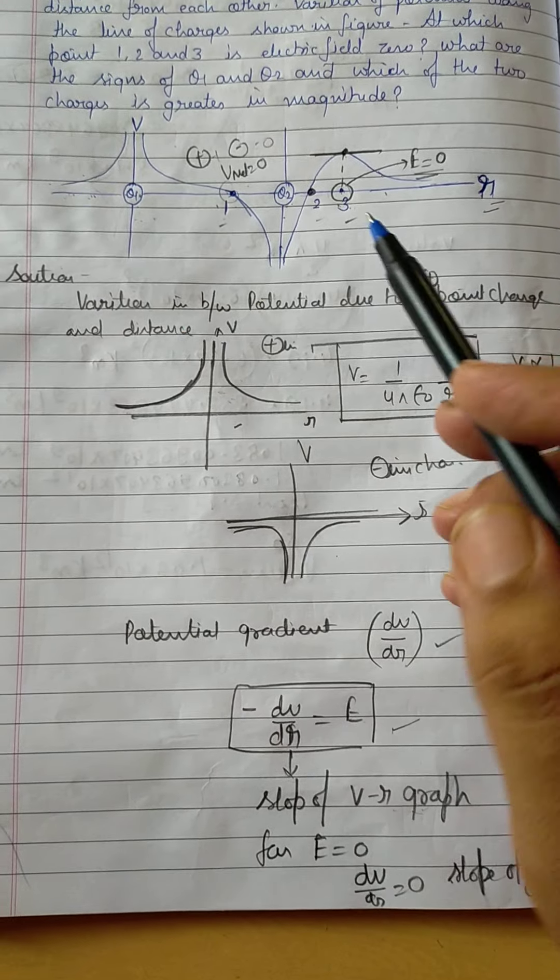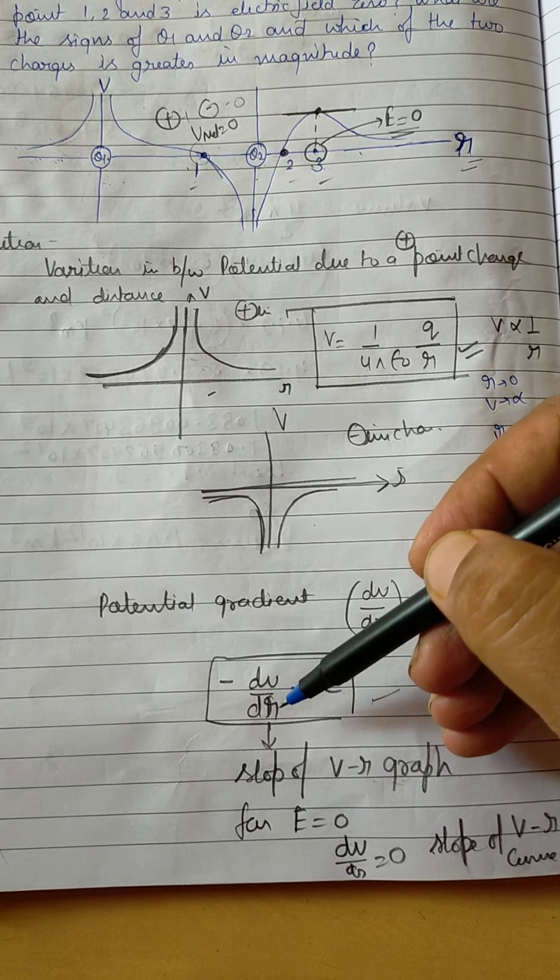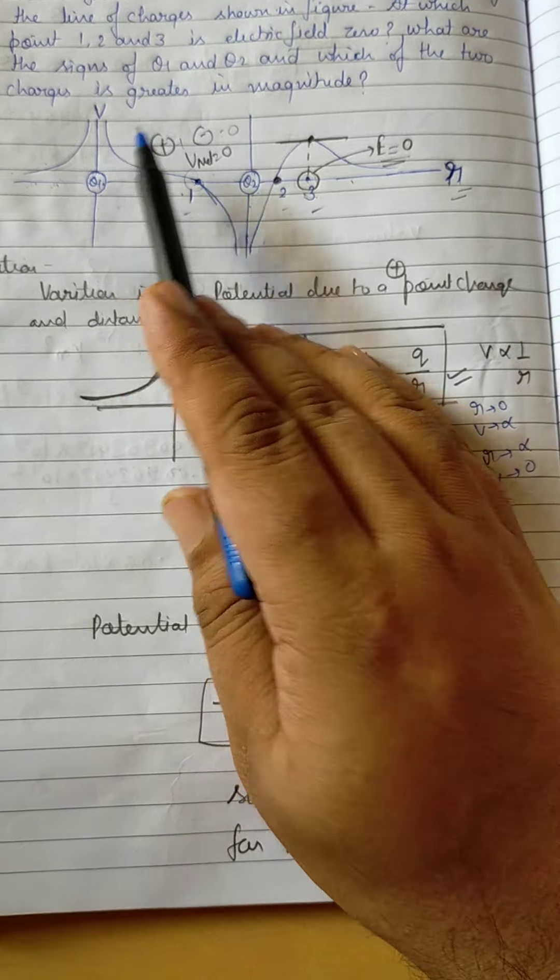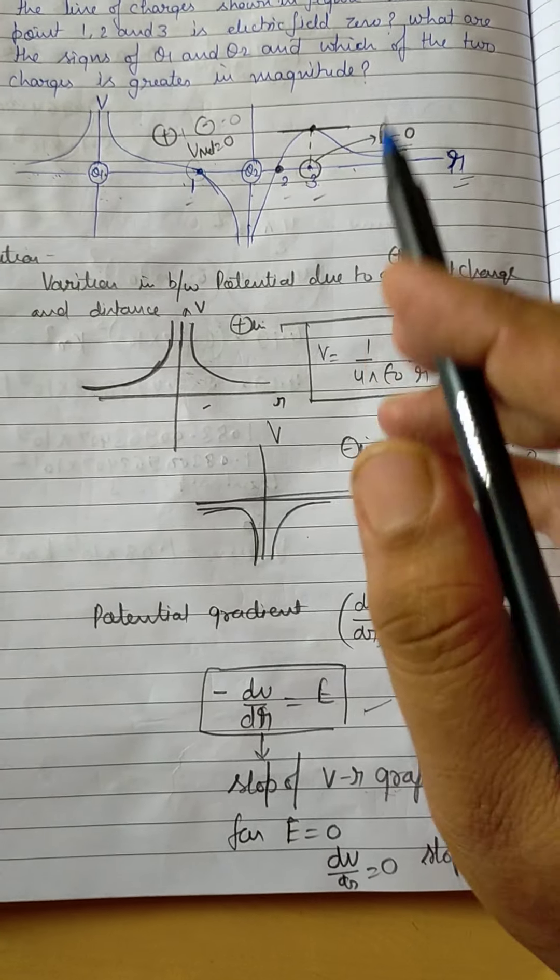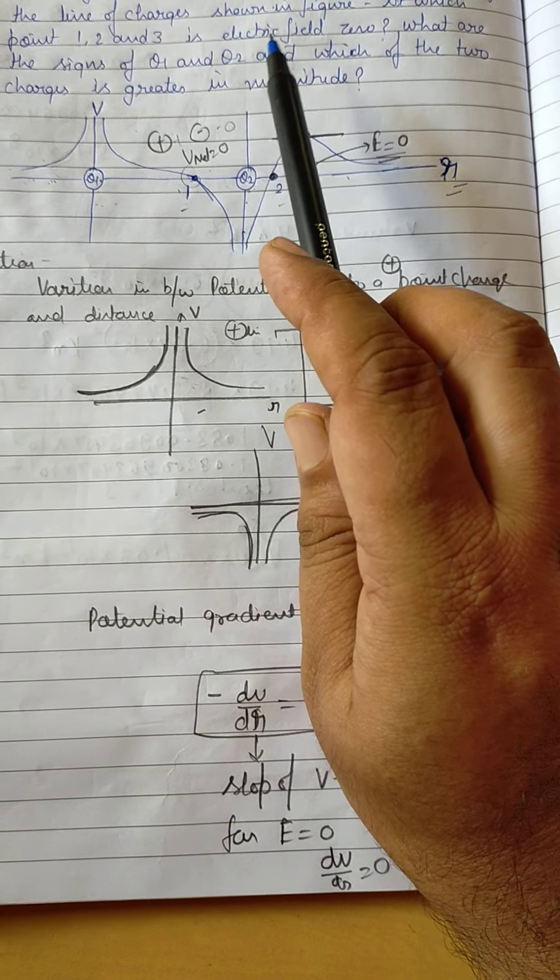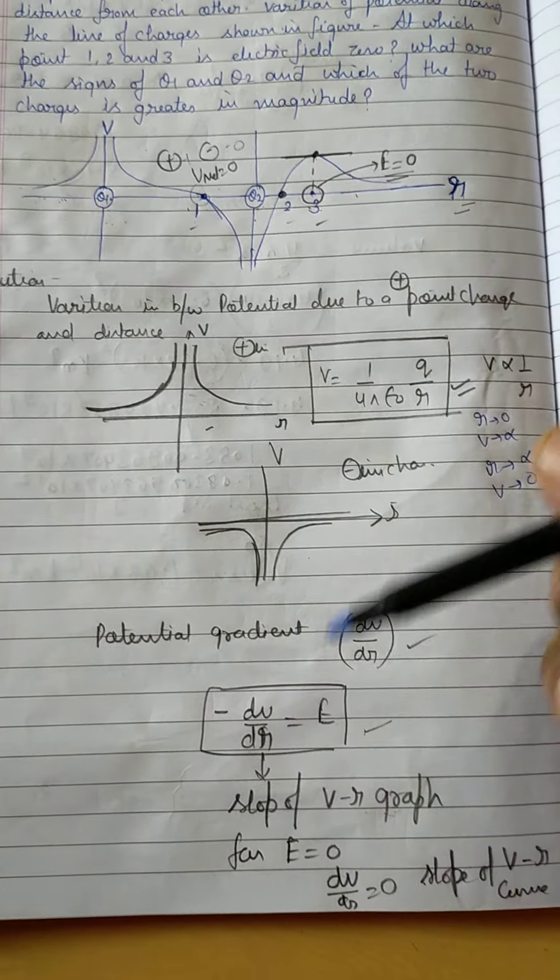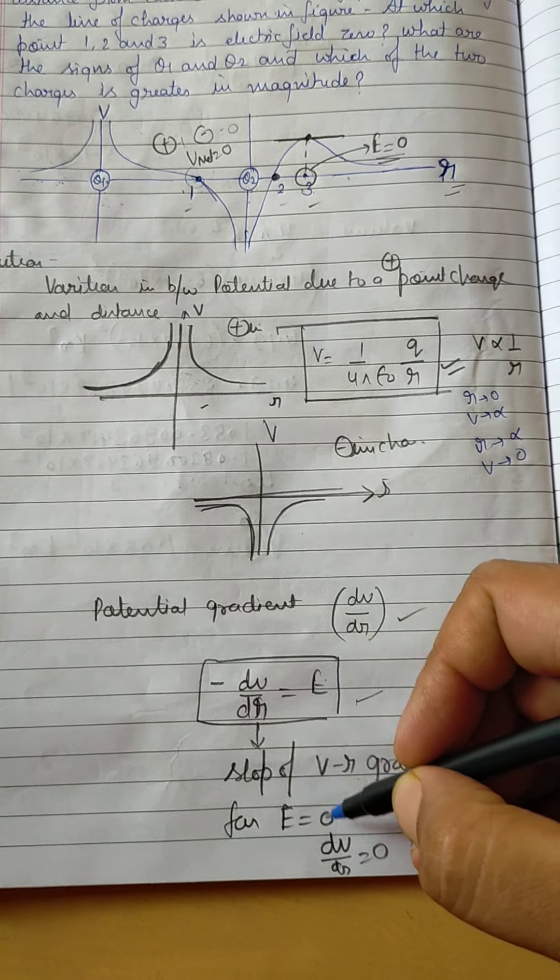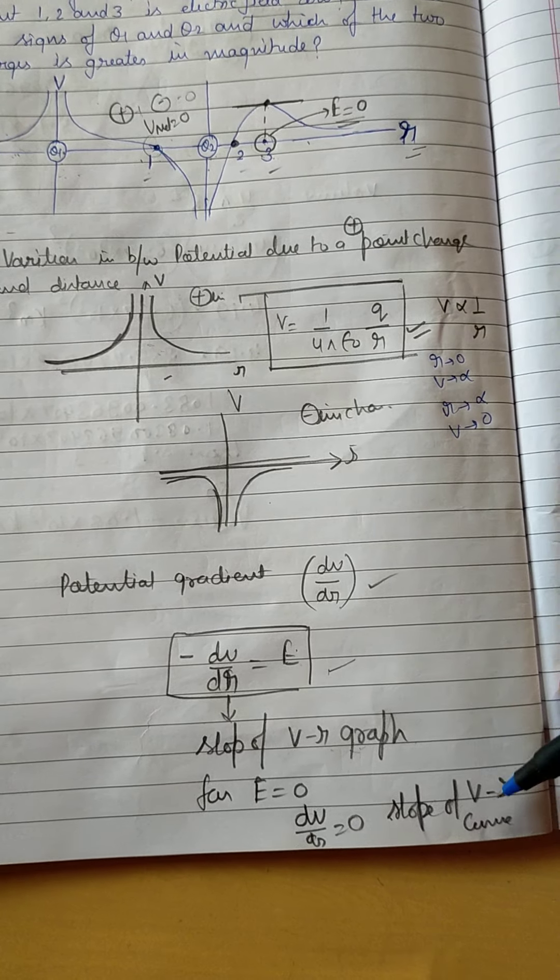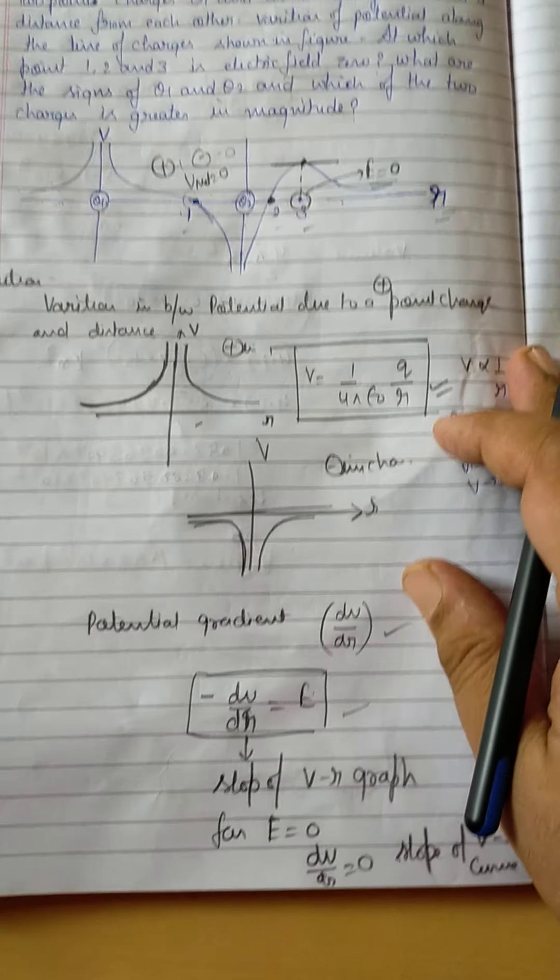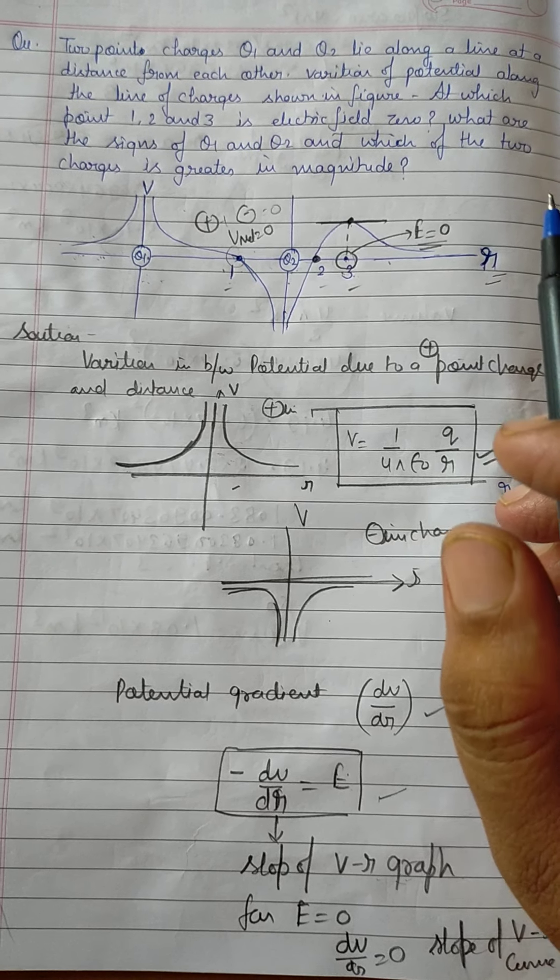तो जिन quantities में graph given होता है, उन quantities में अगर आप divide करते हैं तो graph का slope form करती हैं। यहाँ पे भी आपने dV/dr आप कर रहे हैं, तो यह dV/dr क्या है? Graph का slope, and which is equal to E. यहाँ पे first question में आपको कह रहा था कि electric field की value 0 होनी चाहिए। If E is equal to 0, then dV/dr is also equal to 0.